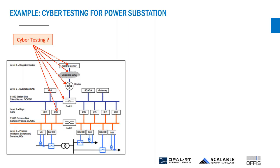Things like circuit breakers, transformers, capacitors, and so on. Those IEDs receive data from level zero and can issue control commands to control level zero.